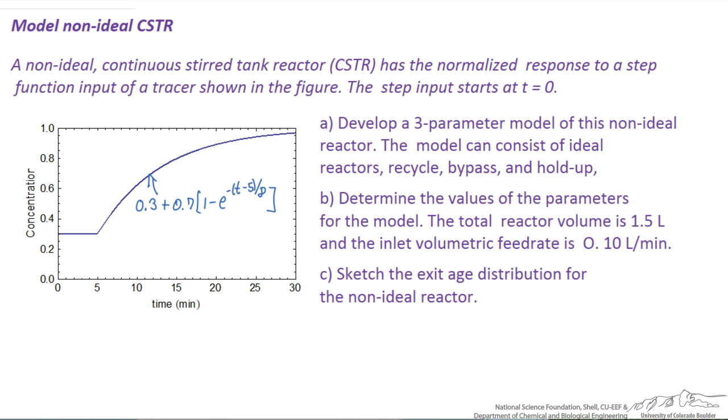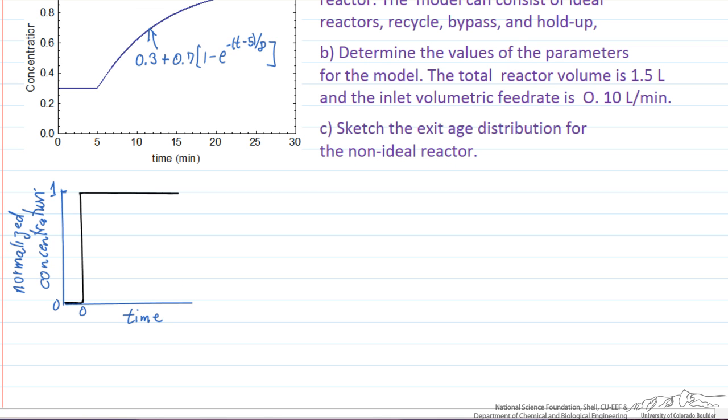So the exit age distribution corresponds to what would be the tracer response if I did a pulse input instead of a step function input. The input I've drawn here is the black line.